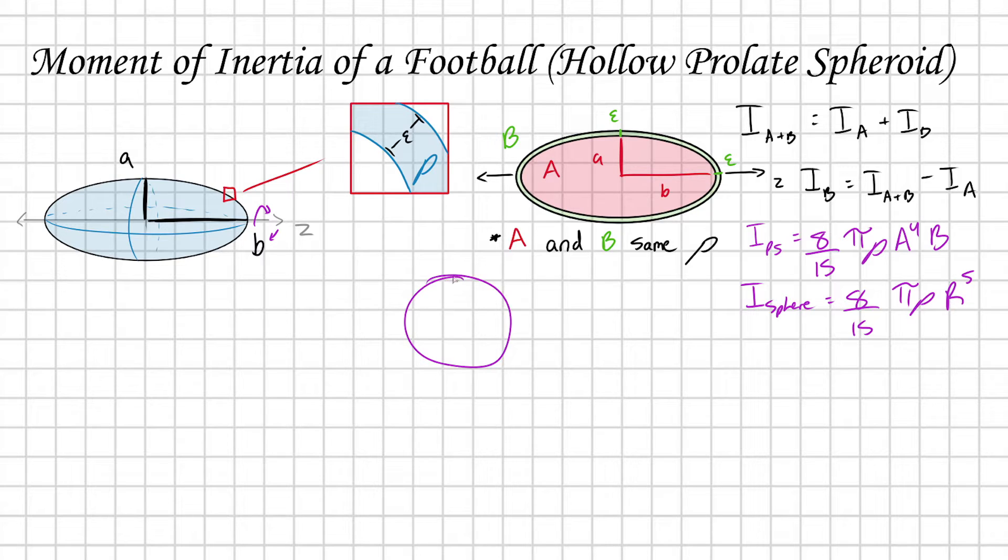I can imagine I have some sphere with radius A, and then I stretch the sphere out in one direction so that this axis is still A, but now I have one major axis B. This is a transformation I'm doing to get from sphere to spheroid.